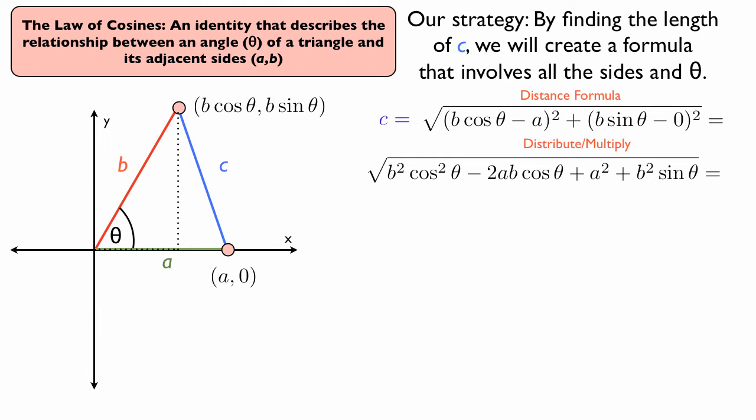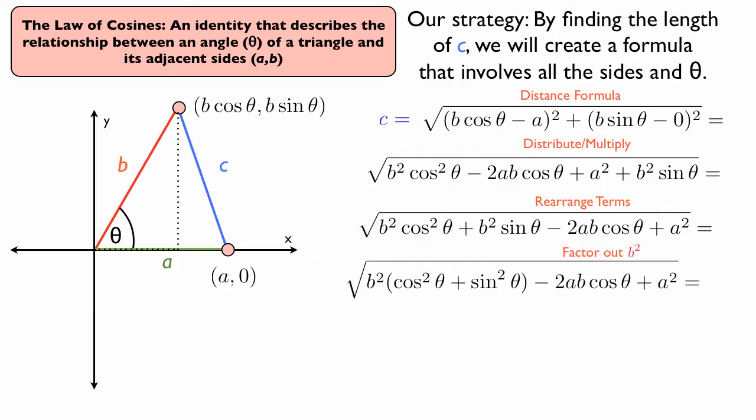And we could rearrange these terms so that both of those b squared terms come together. In other words, at the very beginning, we have b squared cosine squared theta, plus b squared sine theta. Why do we do that? So we can factor out the b squared. We have, at the beginning, b squared, open parentheses, cosine squared theta, plus sine squared theta, close parentheses, and then all the stuff that we had before.